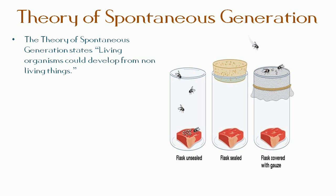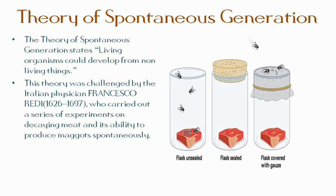This theory was challenged by Italian physician Francesco Redi, who carried out a series of experiments on decaying meat and its ability to produce maggots spontaneously. Redi placed meat in three containers: one was uncovered, a second was sealed, and the third was covered with a fine gauze that would exclude flies.